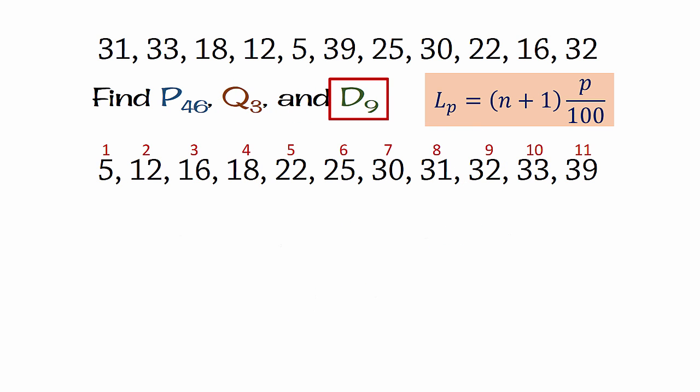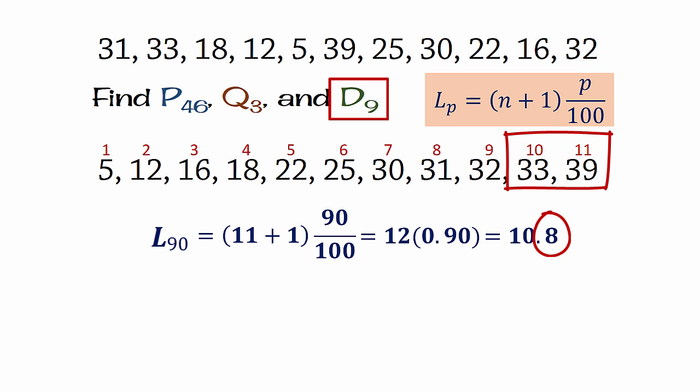For D9 or the 90th percentile, the locator is 12 times 0.9, which gives 10.8, that is 0.8 of the distance between the 10th and 11th observations. So the 90th percentile is 33 plus 0.8 times the distance between 33 and 39, which is 6, and that gives 37.8.